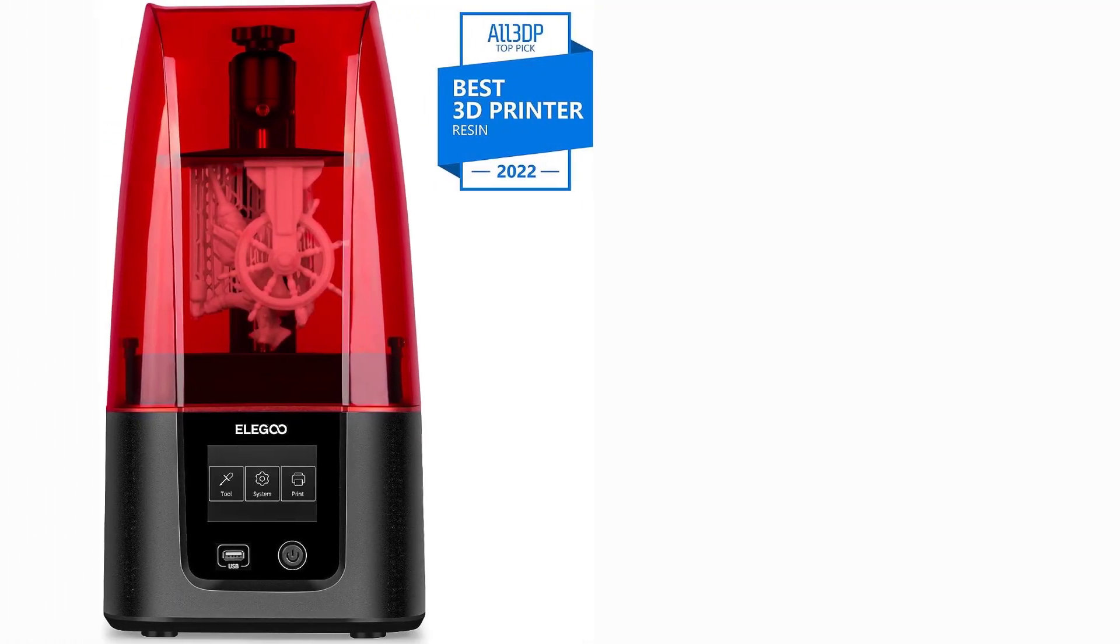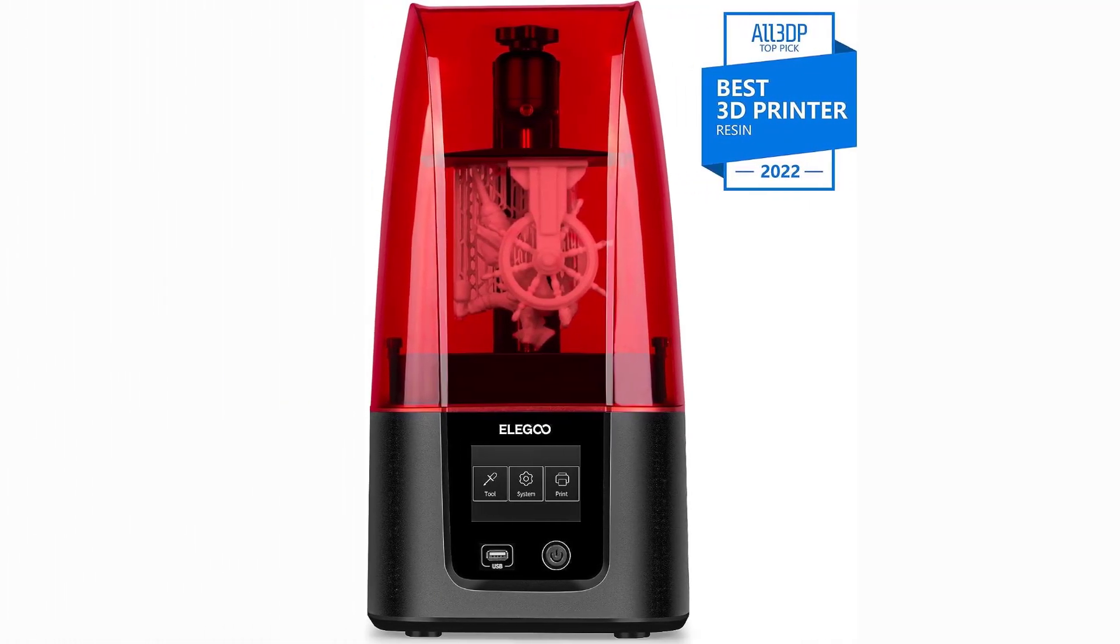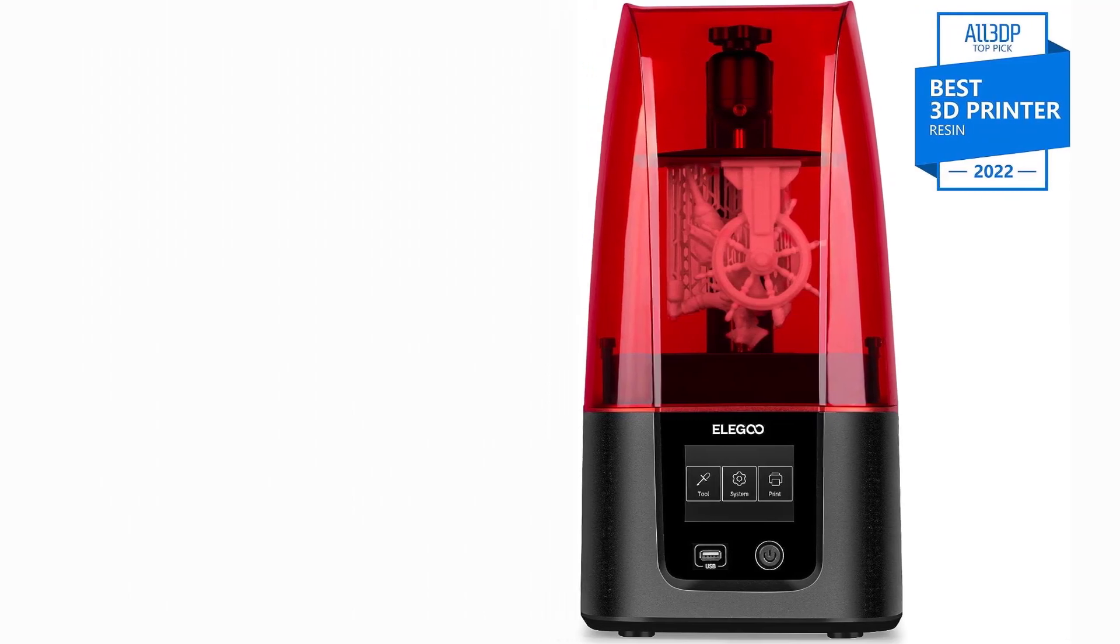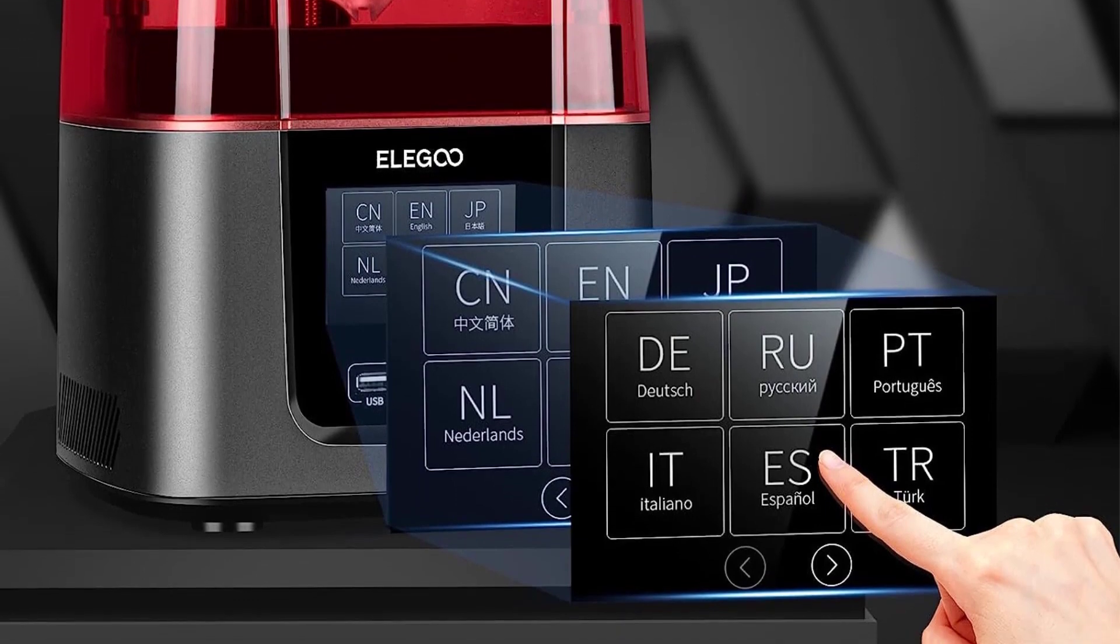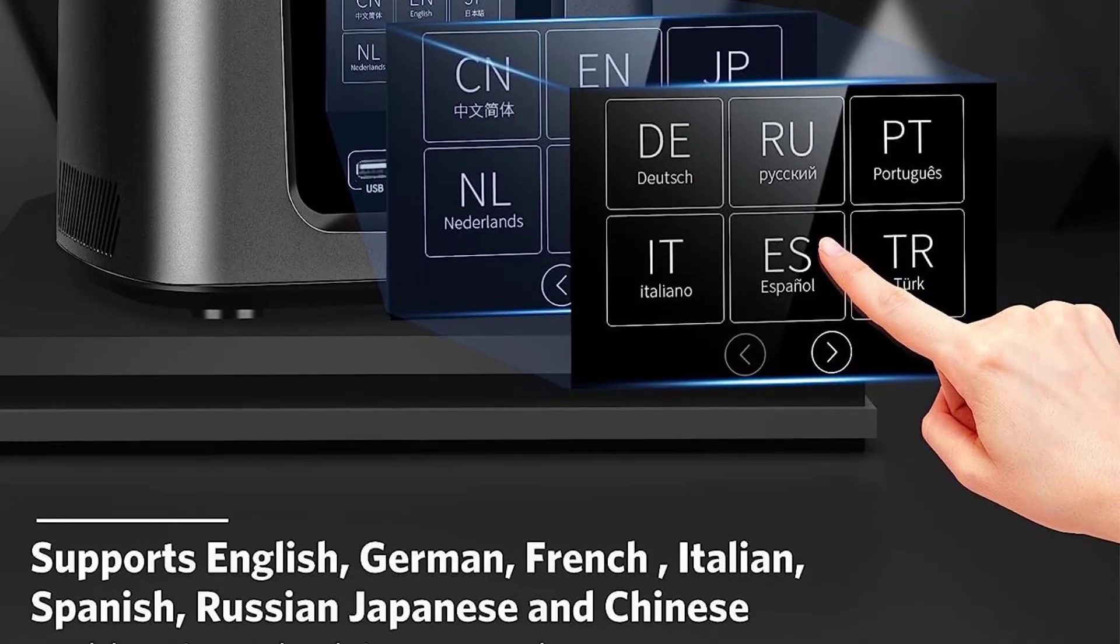Significantly enhance your 3D printing efficiency with the best 3D printer for miniatures, the ElegoMars 2 Pro Mono MSLA 3D printer, which takes just 2 seconds per layer exposure to cure resin so you can watch your miniature creations come to life even faster.